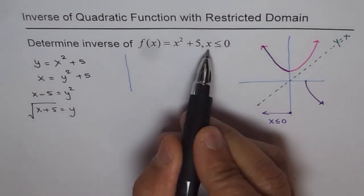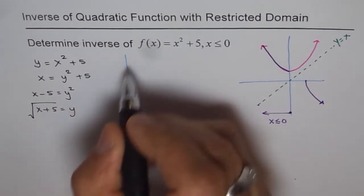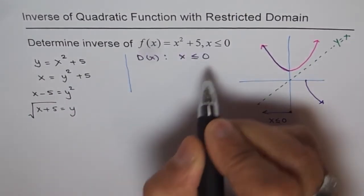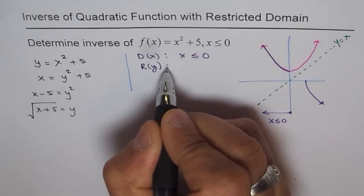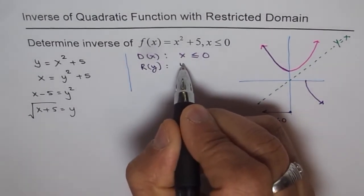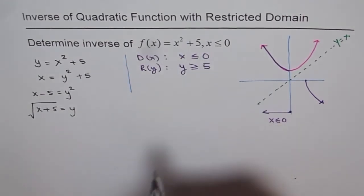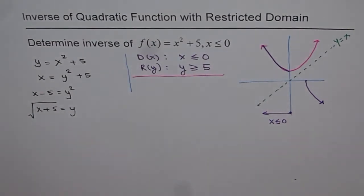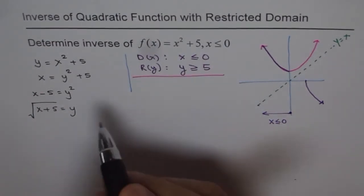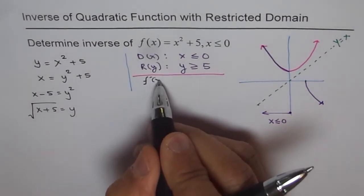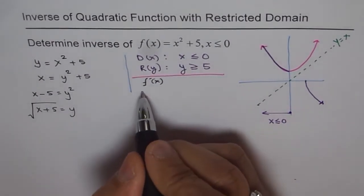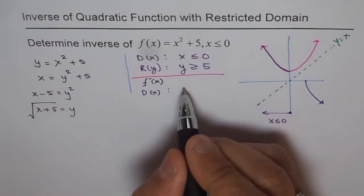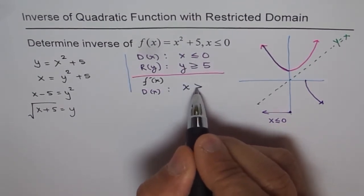Looking at the original function f(x), the domain is x ≤ 0 and the range is y ≥ 5. When we find the inverse of a function, the domain and range must swap. So for f⁻¹(x), the domain becomes x ≥ 5.